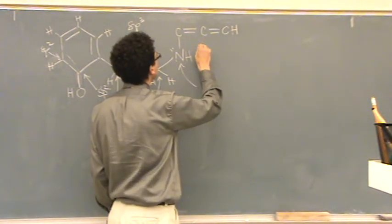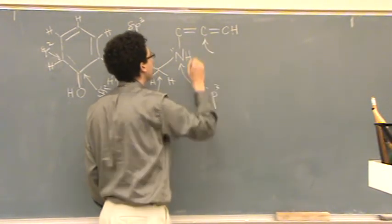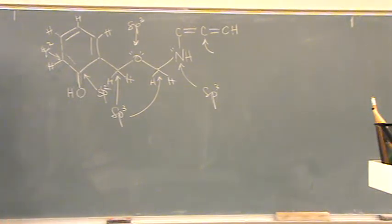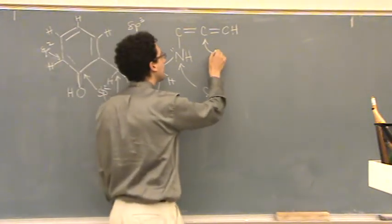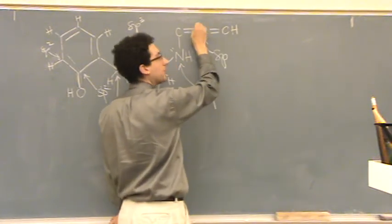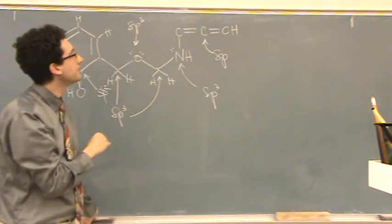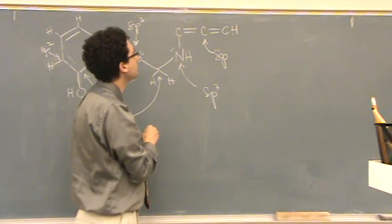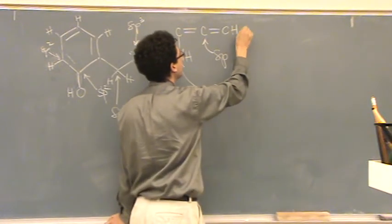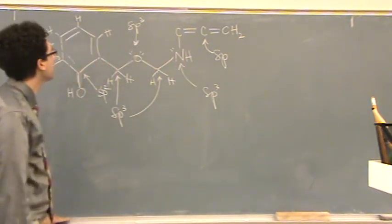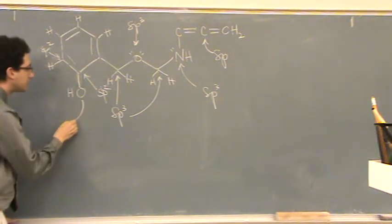How about this one? Two groups. Two groups, what's that called? sp. Yeah, there's a pi bond on either side of it. Oh, and this should be CH2. Sorry, my fault.